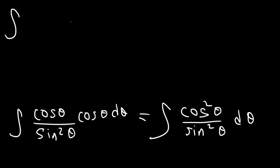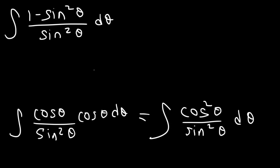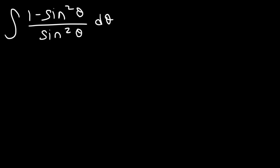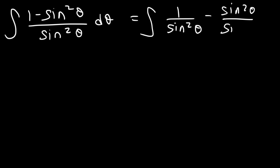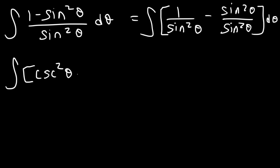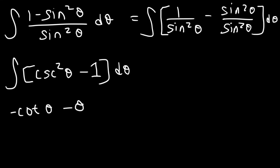The best thing to do at this point is to replace cosine squared with 1 minus sine squared, because sine squared plus cosine squared equals 1. Now we can split the fraction into two fractions: we divide 1 by sine squared and we divide sine squared by itself. Since 1 over sine is cosecant, 1 over sine squared is cosecant squared, and sine squared over sine squared is 1. The antiderivative of cosecant squared is negative cotangent, and the antiderivative of negative 1 d theta is negative theta, plus C.